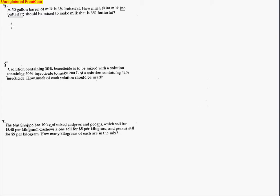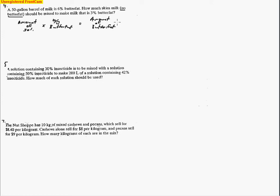The way we set up these mixture problems is we start with an amount of solution, multiply by a percentage — in this case butterfat — and that gives us an amount of butterfat. Typically you'd change the percentage to a decimal, but I'm going to leave it as a number. So when I find the amount of butterfat, the result is times 100, because I'm not converting percent to decimal. As long as I'm consistent and don't change any percents to decimals, I'll still get the correct answer.